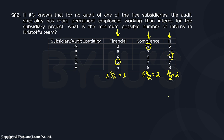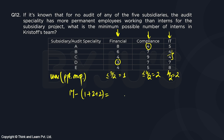Considering all three audit specialities, there can be a maximum of one, two, and two permanent employees respectively — totaling five. So the minimum number of interns is 17 minus five, which gives us 12. Since it's a TITA question, we type in 12.